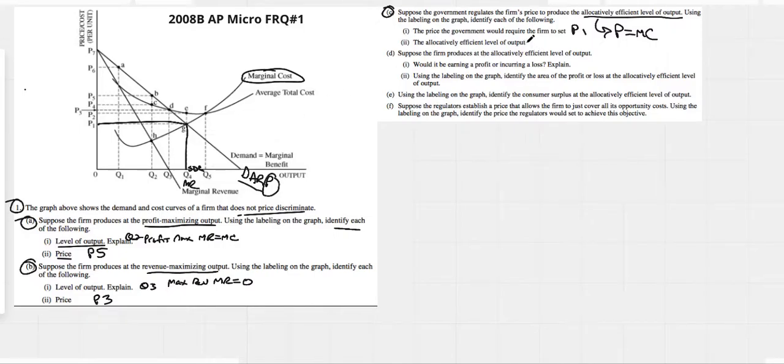Suppose the firm produces at the allocatively efficient level of output. Would it be earning a profit or incurring a loss? Explain. Well, we can know at that quantity Q4, our average total cost is above the price. So when your price is less than your ATC, you're definitely making a loss. So they are making a loss and we would explain it just like that: price is less than the ATC, therefore they're making a loss.